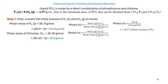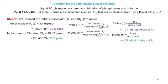For chlorine: the molar mass of Cl as an element is 35.45 g/mol. Since chlorine exists as a diatomic molecule Cl₂, we multiply by 2 to get 70.9 g/mol. Expressing as moles = mass ÷ molar mass and substituting the actual values, we get 4.55 as the initial moles of chlorine.